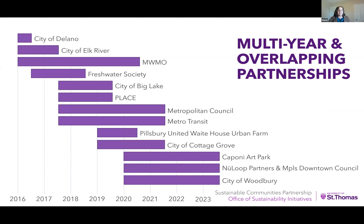This slide shows how the multi-year and overlapping partnerships look over time — the number of partners at any given point and the variable length of partnerships. Some partners partner for only a year, but most partner for longer. We also have campus partnerships, which adds a few more partners. There are usually about five or six partners at any given point in time.